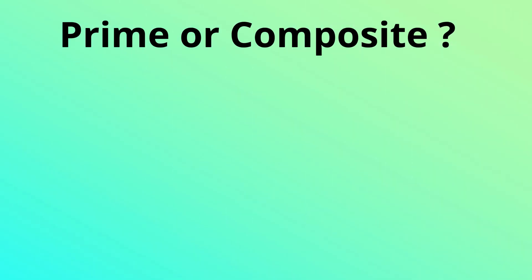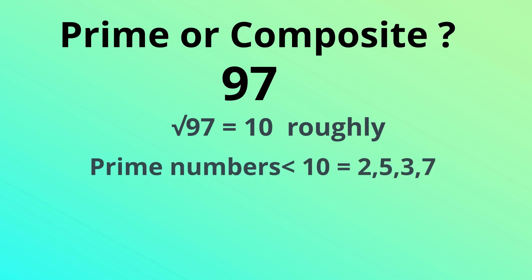Let's look at another example. How about 97? The square root of 97 is about 10, so we will look at prime numbers less than 10. And they are 2, 5, 3, and 7.